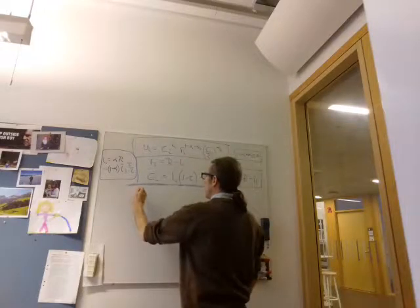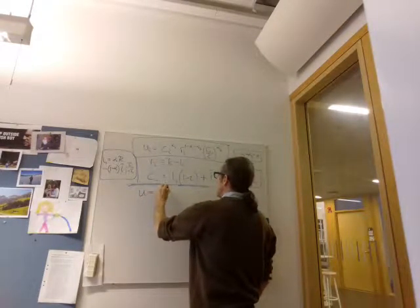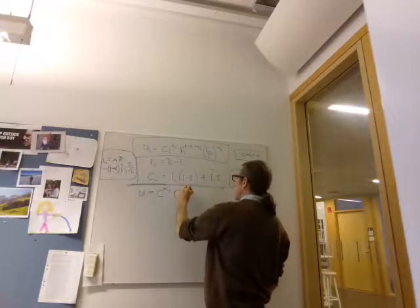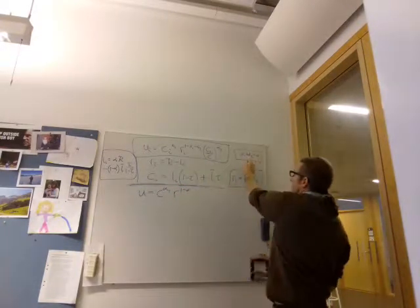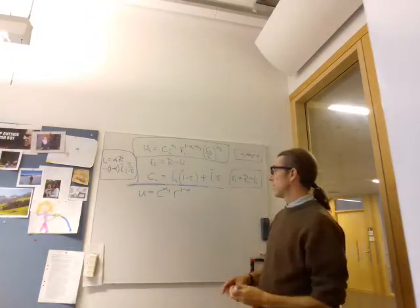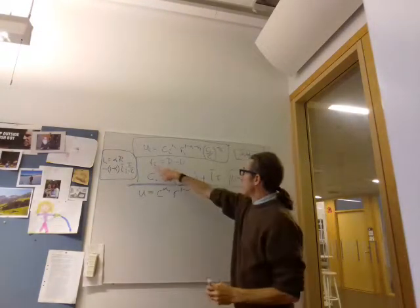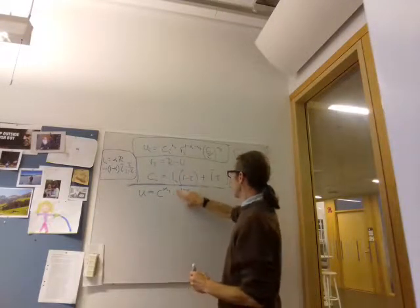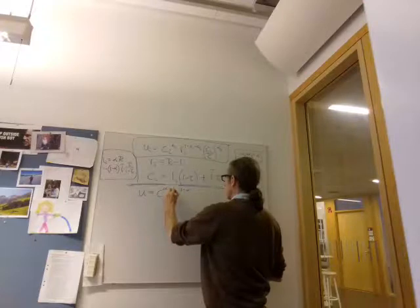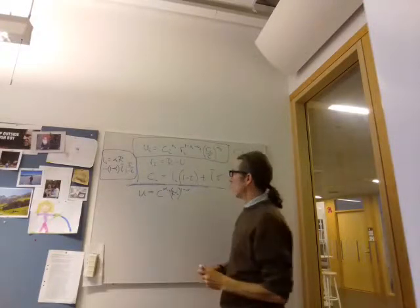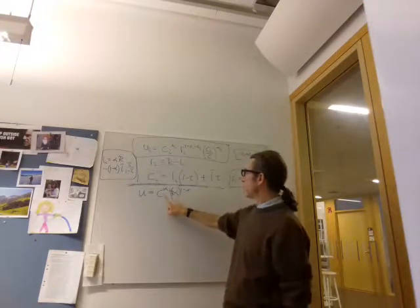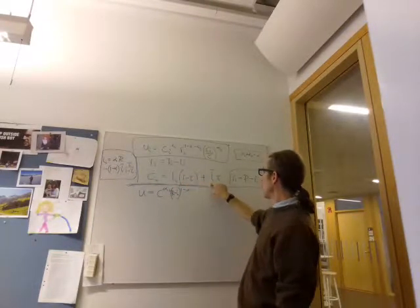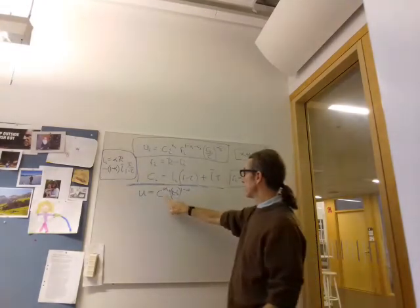And UI equals U bar equals U. So then we can write U is C to the alpha 1, R to the 1 minus alpha. Alpha is alpha 1 plus alpha 2. And then we use this, that R is big R minus L, and C is just L.